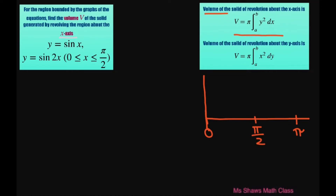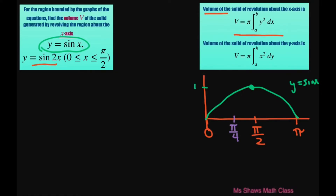For y equals sine of x, at pi divided by 2 that's at 1 — so that's the green one. It would go up to there and then stop. That one is y equals sine of x. And then recall for sine of 2x, that means you're going to have two waves between 0 and 2 pi. So for this one, we have pi divided by 4. If you substitute that in, you get a 1 right here. And then at sine of pi it'll be 0. So basically this one will start at 0 and go something like this.